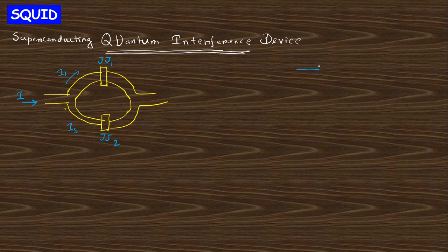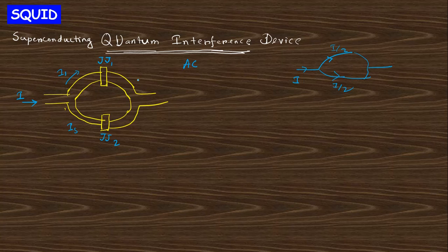In normal conductors, if you have two conductors with a flow of I, there is I/2 and I/2 — very simple. But in the case of a Josephson junction, if there is a flow of current and a DC voltage is applied, this is actually the AC Josephson effect. When we apply a DC bias, there is an oscillating current flow within the Josephson junction. That is why these two currents I1 and I2 are not the same.